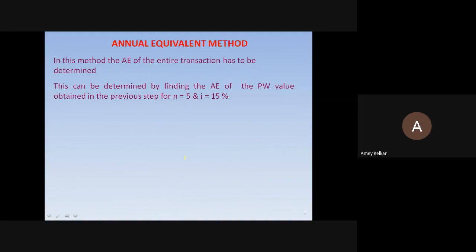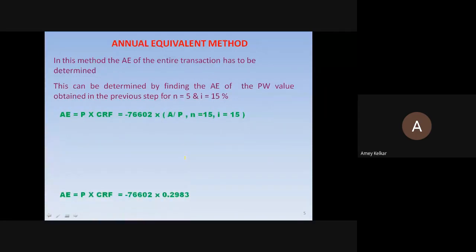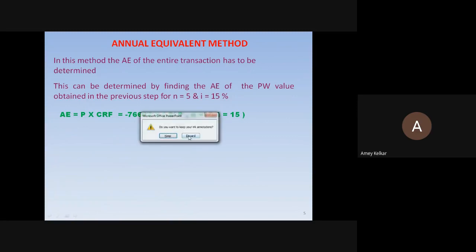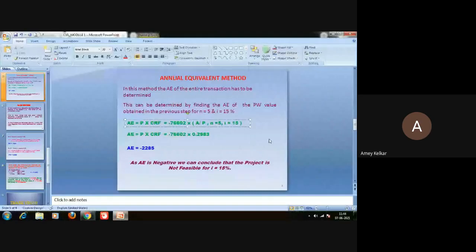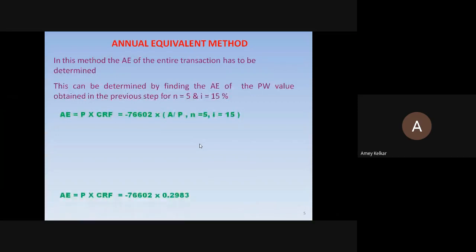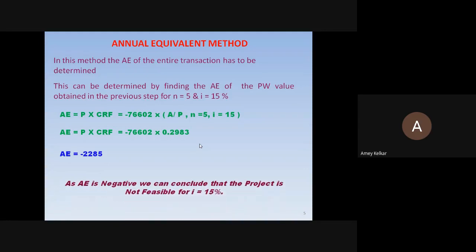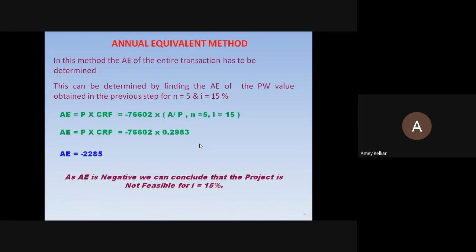For n=5 and i=15%, we use the present worth found in the previous step directly to find the annual equivalent. We refer the finance table for A/P — annuity of present — at i=15% and n=5. The annual equivalent comes out to minus 2,285. Since the annual equivalent is negative, we conclude that the project is not feasible for i = 15%.